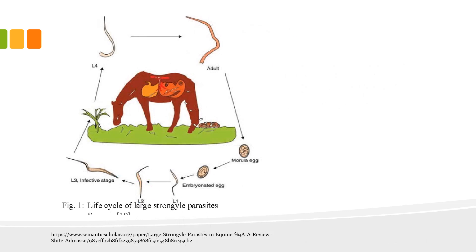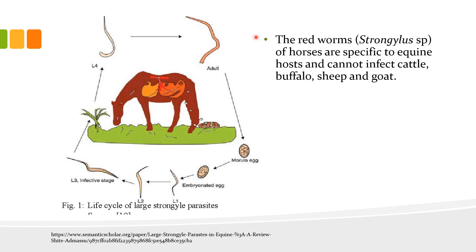An Eimeria tenella infection leads to acute intestinal disorders responsible for important economic losses in poultry farming worldwide. Another example is the nematode parasite the redworms, or Strongylus species, particularly Strongylus vulgaris, which are specific to equines and cannot infect cattle, buffalo, sheep, and goats.